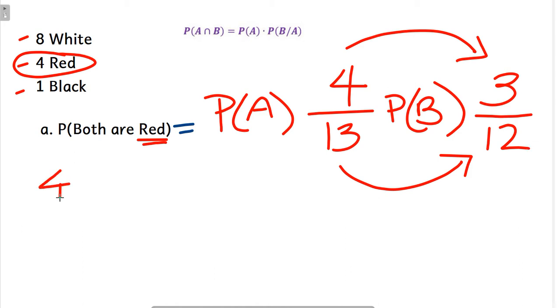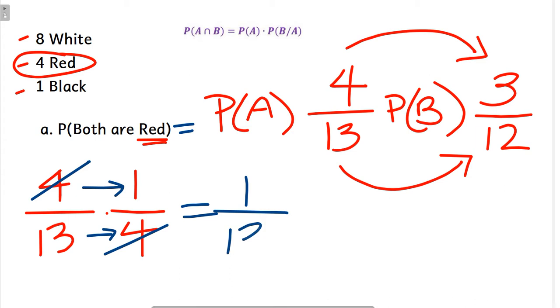I picked a red marble out of this jar, I've set it aside. There are now three red marbles because I've chosen one out and I didn't put it back, and there are 12 total. So we have four thirteenths and three twelfths. Instead of three twelfths, if we divide both by three, we get one fourth. Divide four goes into four one time, and we get one over thirteenth as our probability.